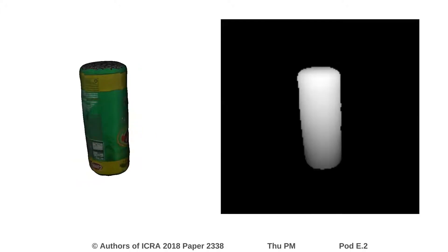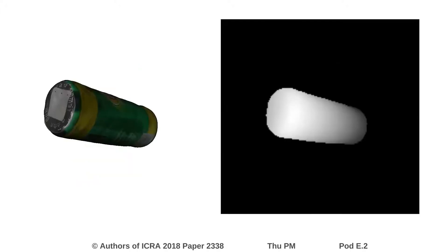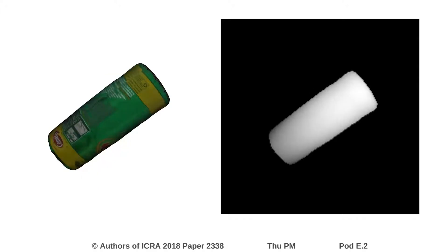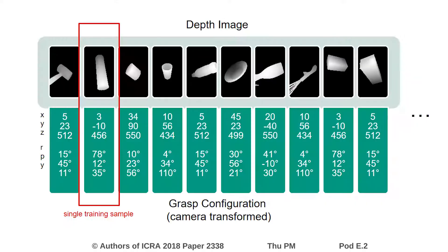For each different pose, we select a suitable grasp from the previously generated list of grasp candidates. By combining the selected grasps for a certain pose of a certain object with the respective rendered depth image, we can generate a dataset of training samples.